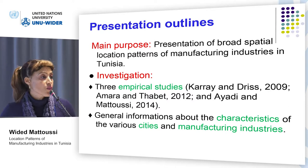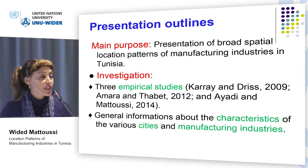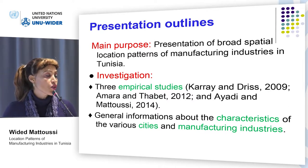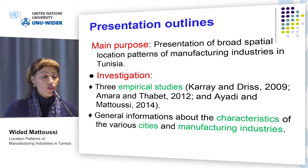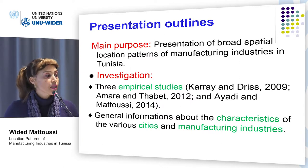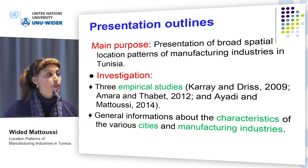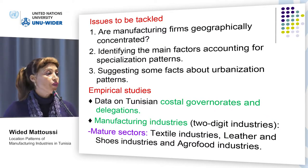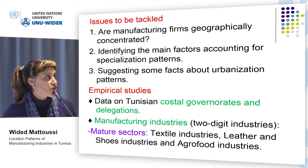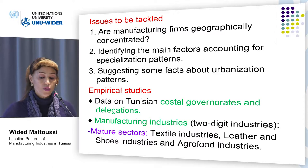In this presentation I will try to shed some light on broad spatial location patterns of the main manufacturing industries in Tunisia. My investigation will be based on three empirical studies and on general information about the characteristics of the main manufacturing industries involved. I will tackle mainly three issues. I will first answer the most crucial question of whether manufacturing industries are indeed agglomerated in Tunisia.